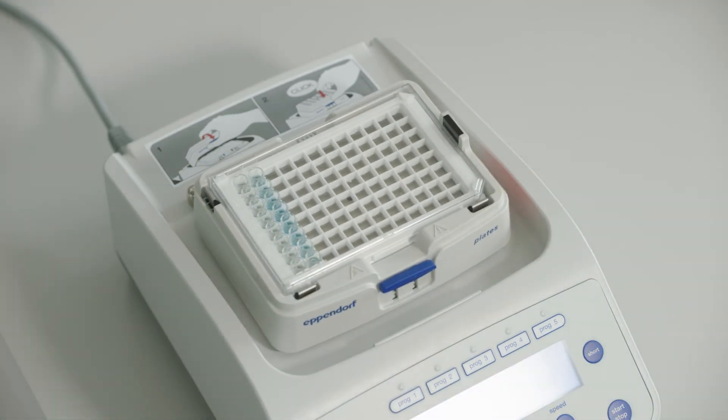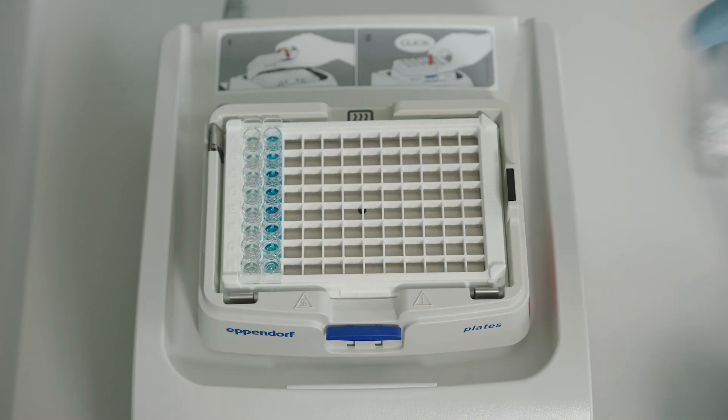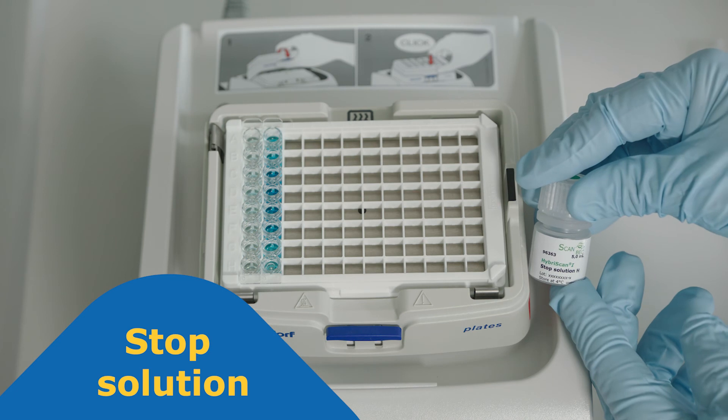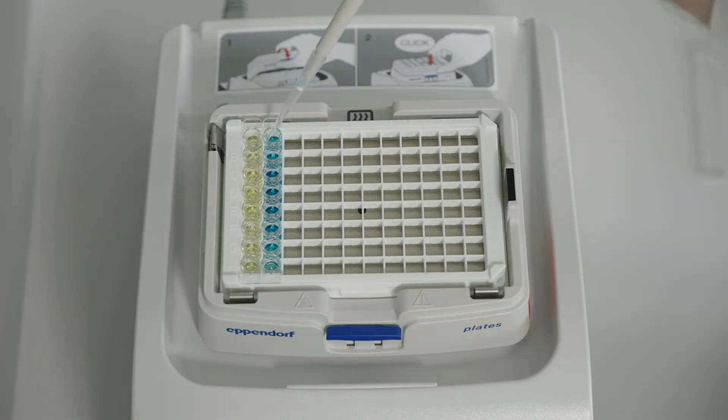The enzymatic reaction is stopped by adding a stop solution. This turns the color of positive samples yellow. The intensity of the color is proportional to the concentration of organisms in the sample. If a prior enrichment step was performed, it is of course no longer possible to quantify the microorganism concentration in the original food sample. However, detection, confirmation, and identification can nevertheless be performed.